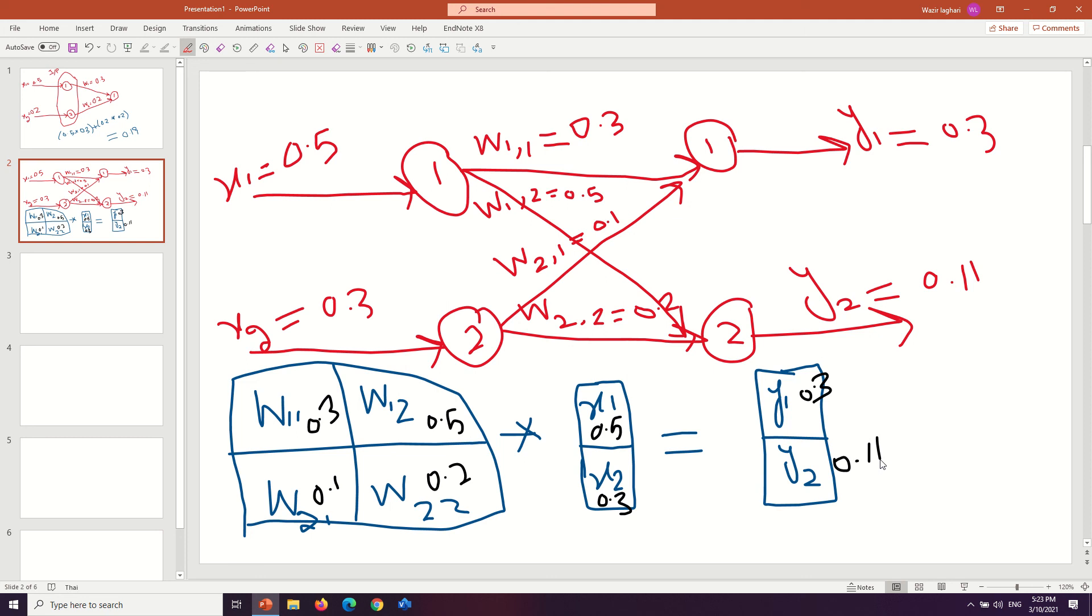So this is the basic concept of how to solve the single neuron or multiple neurons or two neurons. But in this case we use only linear activation functions, not nonlinear sigmoid or ReLU. So in the next video we solve other techniques of neural networks. Okay, thanks.